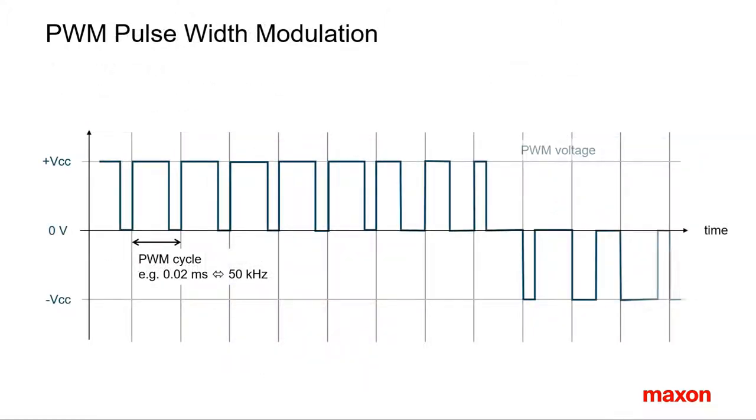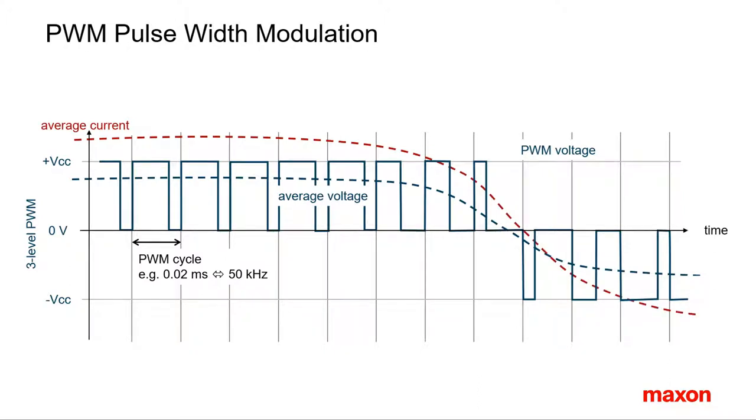PWM achieves different average voltage levels by varying the duty cycle of the high voltage level at constant PWM frequency. Reversing polarity of the high voltage level allows to supply negative voltages to the system. Accordingly, an average current level will result. Switching the voltage in this way is called a three-level PWM scheme.